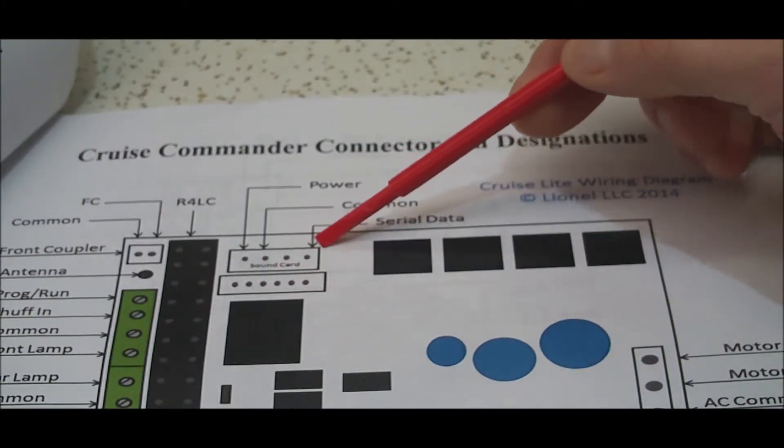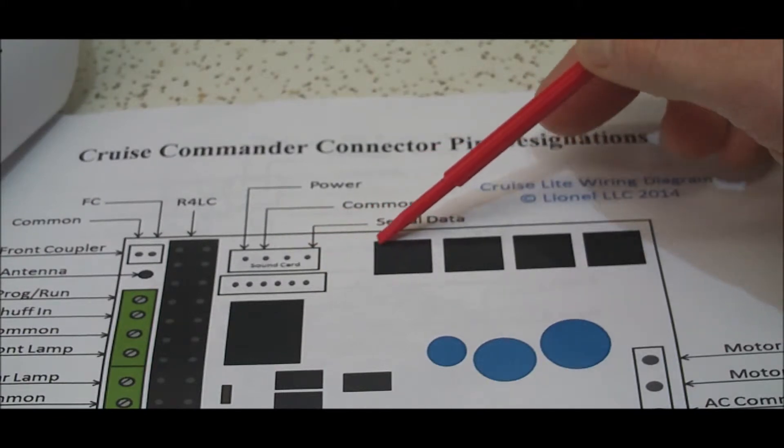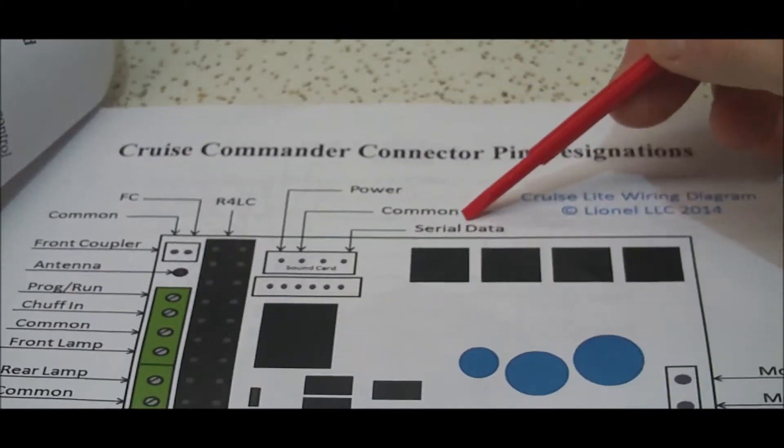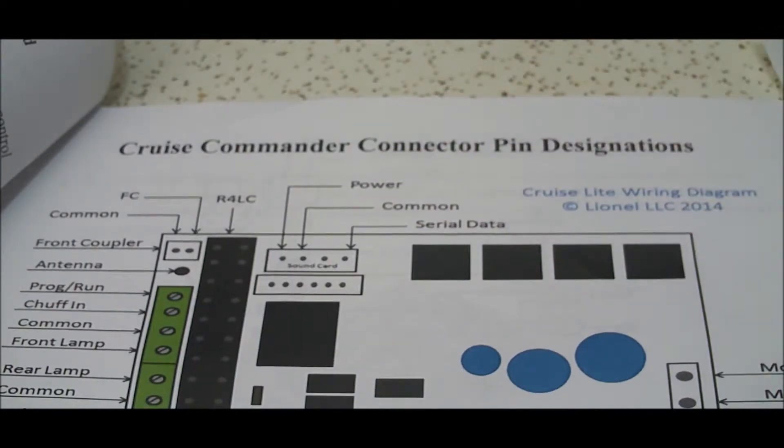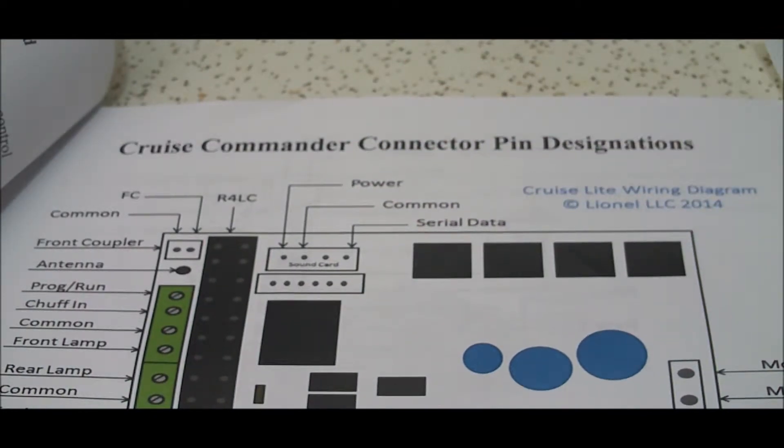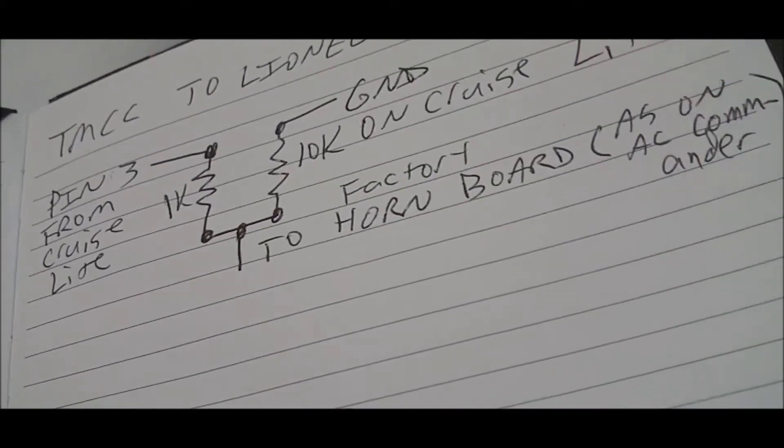When I did that I would get kind of sporadic horn operation without pushing the horn button. When you went in reverse it would give you clicks, and then as you went over joints in the track you would get these little clicks as well. It was very annoying, so I actually had to come up with another circuit.